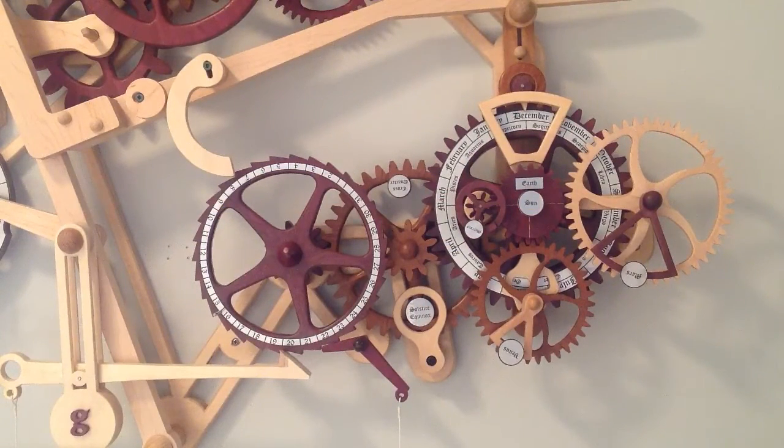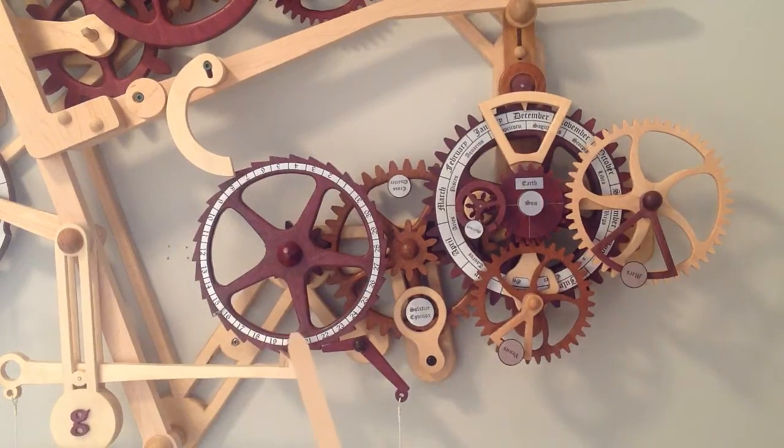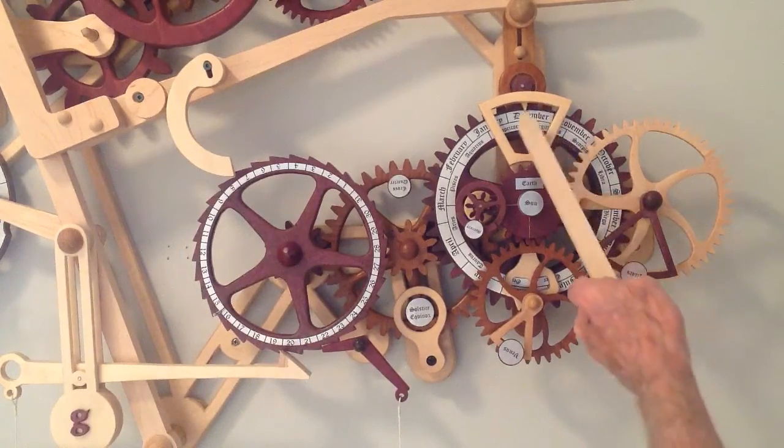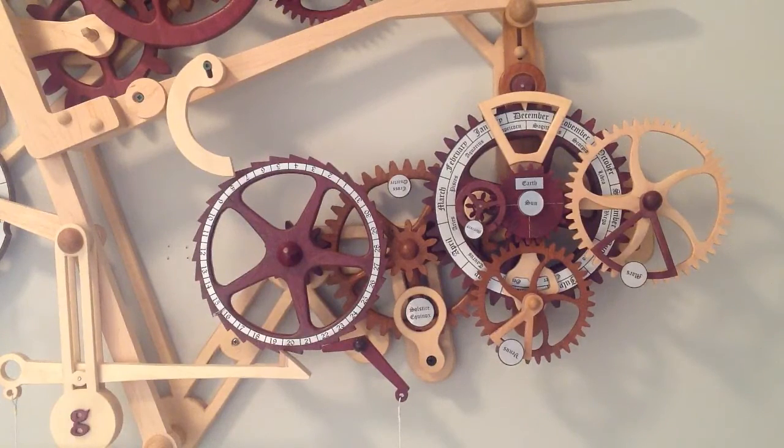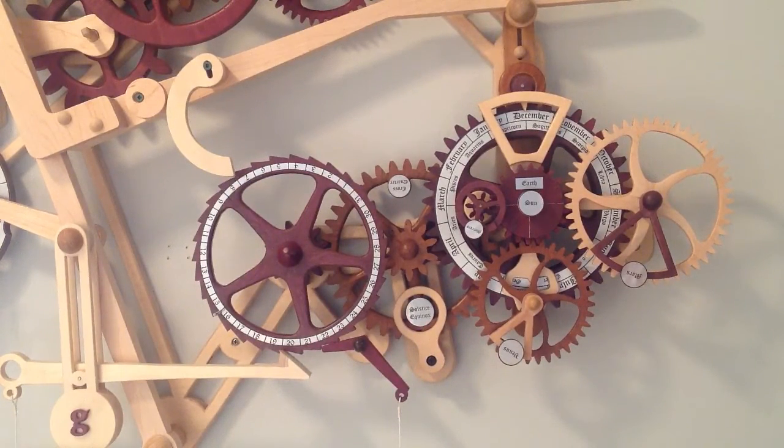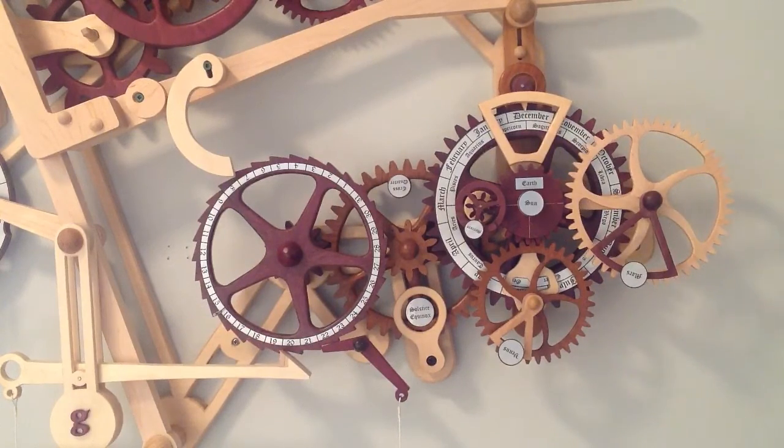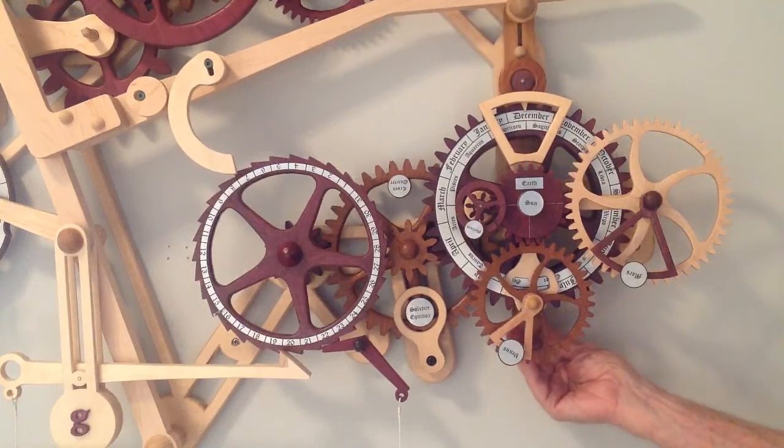I consider this to be the heart of the display. It starts here with the day of the month, the 20th of December. The calendar adjusts automatically for the months with 28, 30 or 31 days. To do this, a cam behind the month wheel moves this guide up or down.